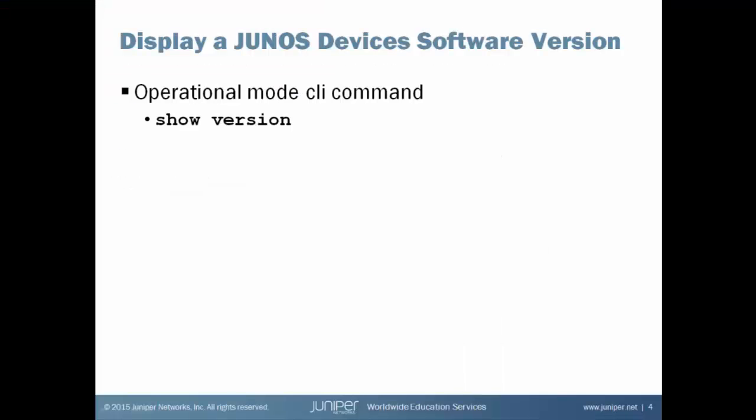Junos provides an operational mode CLI command that displays the current running version of Junos software on a particular platform. The command is show version. Let's take a look at how it works.